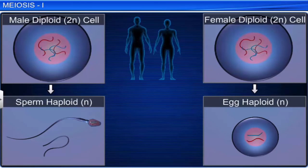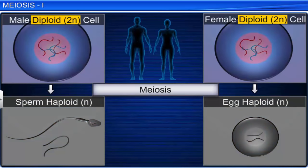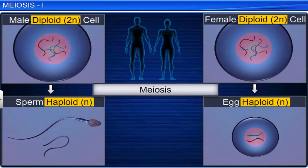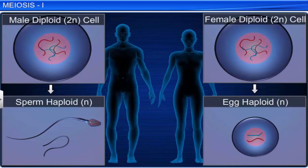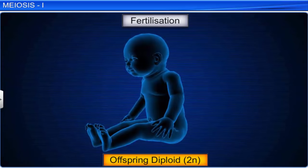In sexually reproducing organisms, meiosis results in the formation of sperm cells and egg cells. Cells that undergo meiosis are diploid, with two sets of chromosomes. However, these diploid cells, after meiosis, produce haploid cells with one set of chromosomes. Later, during the process of fertilization, these haploid cells fuse to form a diploid offspring. Thus, meiosis helps maintain the chromosome number in a species.